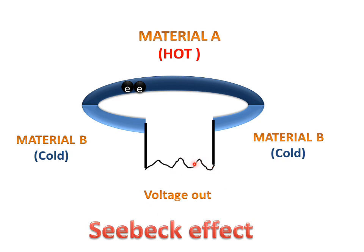We can observe this voltage by the movement of electrons from the hot material to the cold material. This is called the Seebeck effect, also known as the thermocouple, for producing electricity. Thank you.